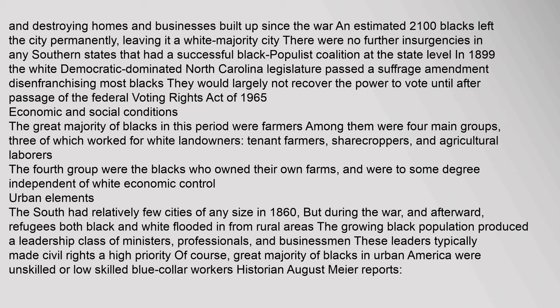An estimated 2,100 blacks left Wilmington permanently, leaving it a white majority city. There were no further insurgencies in any southern states that had a successful black populist coalition at the state level. In 1899 the white Democratic-dominated North Carolina legislature passed a suffrage amendment disenfranchising most blacks. They would largely not recover the power to vote until after passage of the Federal Voting Rights Act of 1965.